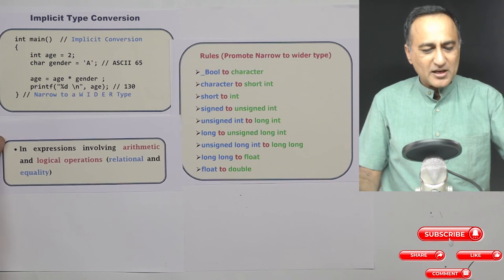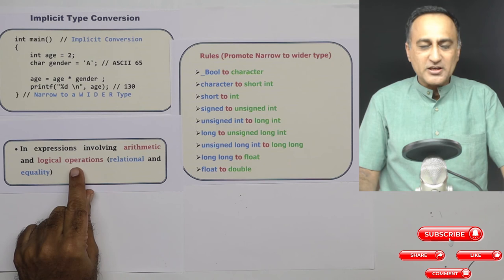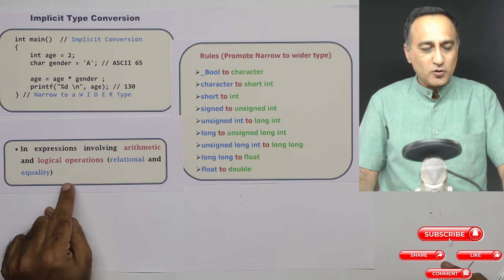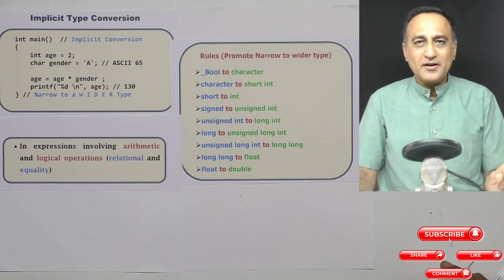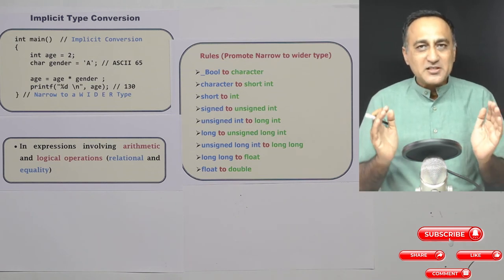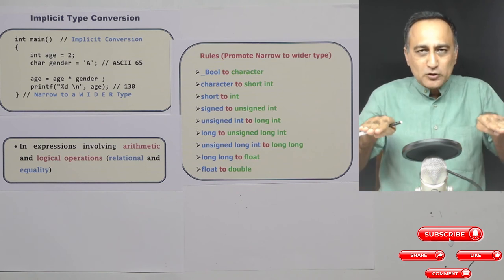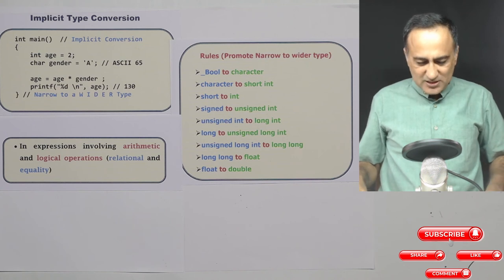Suppose you are having expressions involving arithmetic and logical operations. Logical means greater than, lesser than, equal to—that is relational—and equality, not equal to, equal to. There you cannot compare a narrower data type with a wider data type because the capacity of a narrow data type is much less than the capacity of the wider data type. So C brings both of them on the same level and then does the job. To give you a simple example...